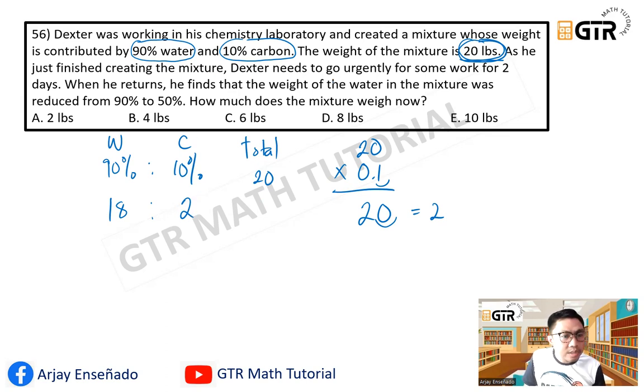So it says Dexter needs to go urgently for some work for 2 days. When he returns, the weight of the water in the mixture was reduced from 90% to 50%. How much does the mixture weigh now? So the total will be reduced.